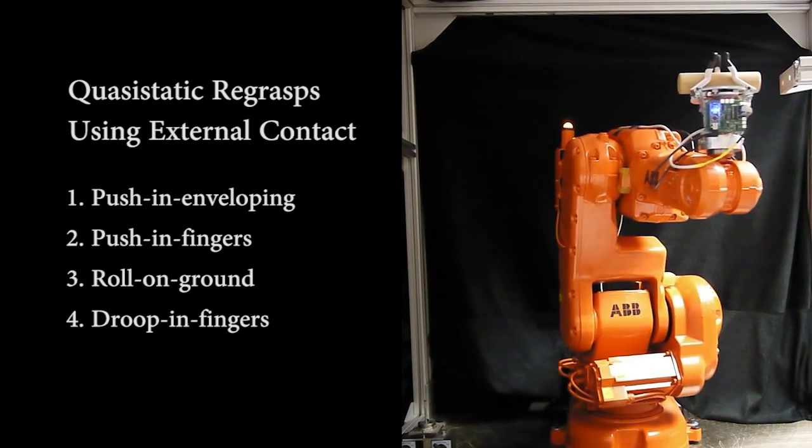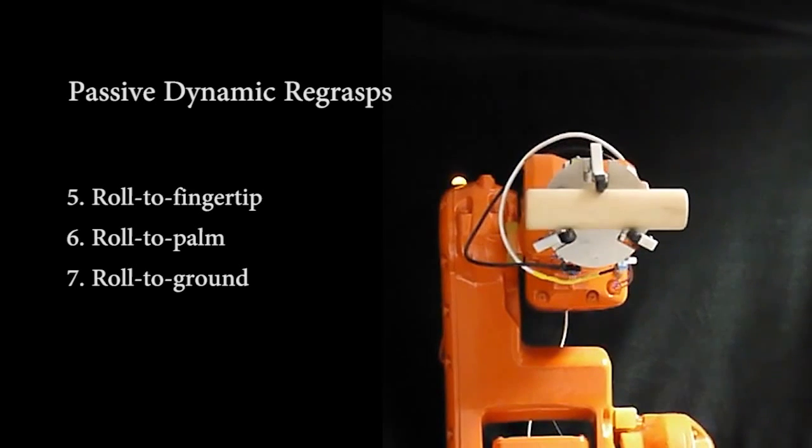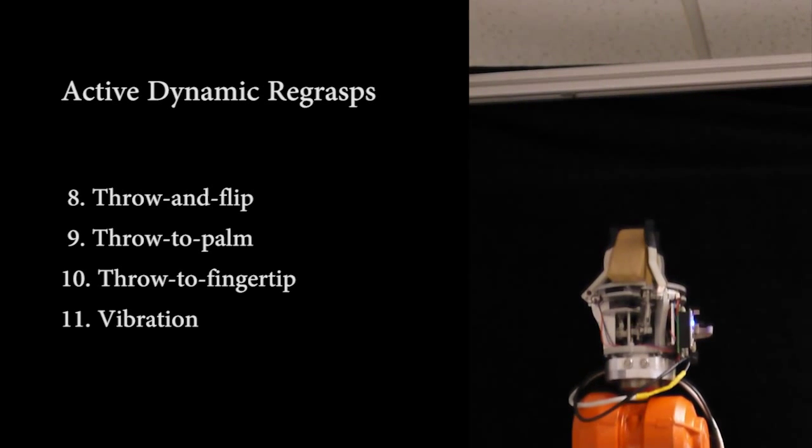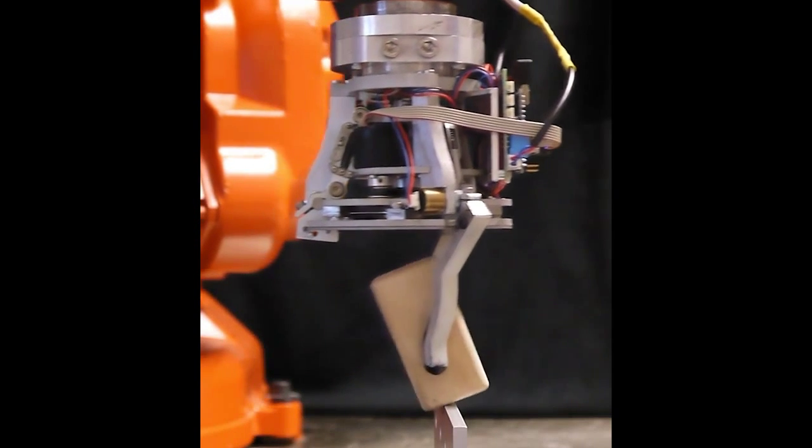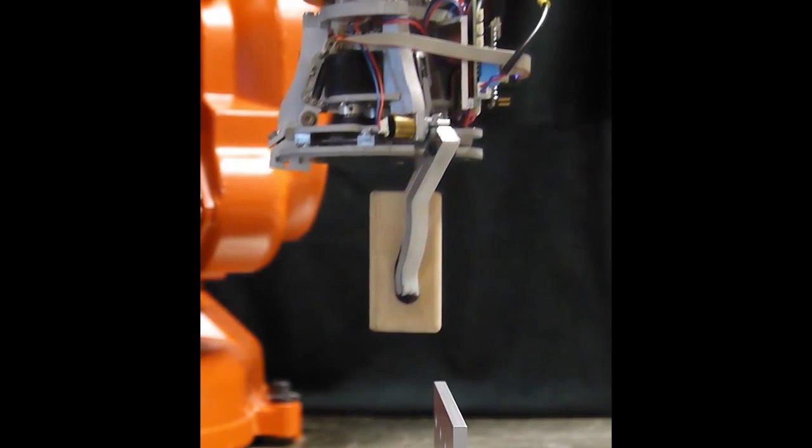To bring such dexterity to robot hands, we must look around the hand and look at the entire hand robot environment system. Gravity, inertia, arm motions, and external contacts from the environment can all be exploited to manipulate the object in the hand.